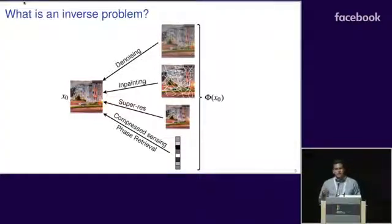and each entry of Φ(x₀) is a single measurement. Some common examples of these inverse problems from image processing are denoising, inpainting, and super-resolution, where we want to recover a clean image from a noisy version, a masked version, and a low-resolution version.